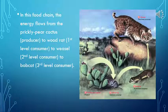In this food chain, the energy flows from the prickly pear cactus — a producer — to the wood rat, a first-level consumer, to the weasel, a second-level consumer, and finally to the bobcat, a third-level consumer.